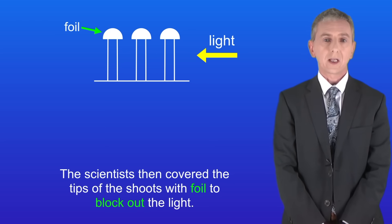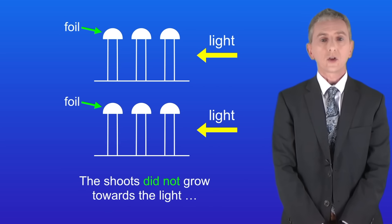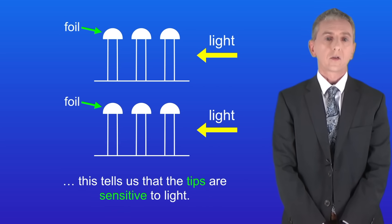The scientists then covered the tips of the shoots with foil to block out the light. Again, the shoots did not grow towards the light, so this tells us that the tips are sensitive to light.